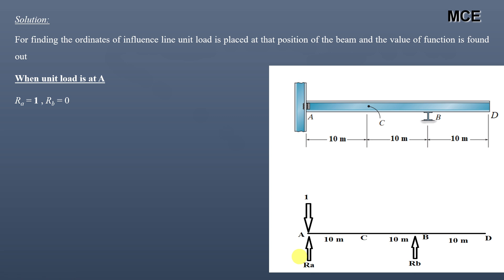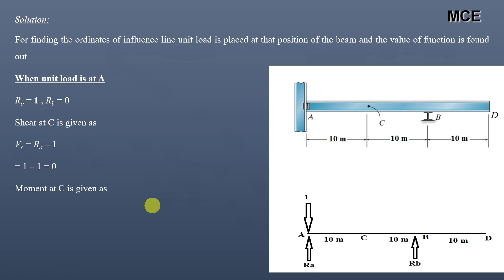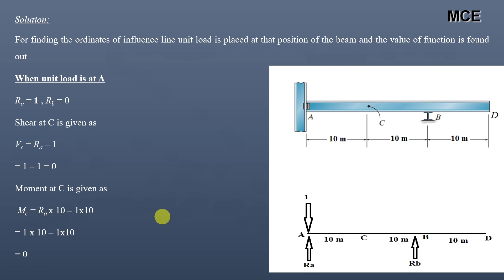Now find shear at C and moment at C. Cutting a section at C and considering portion AC, shear at C equals RA minus 1, which gives 0. For moment at C, taking clockwise as positive: MC = RA × 10 − 1 × 10 = 1×10 − 1×10 = 0. So when the unit load is at A: RA=1, RB=0, shear at C=0, and moment at C=0.